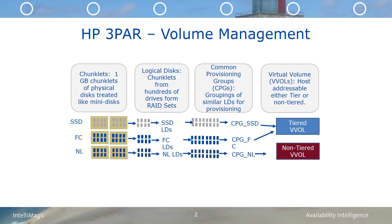The way that 3PAR volume management works is that you will have SSDs, fiber channel drives, and near-line drives. Within those, you will have chunklets that come from the physical disks and are treated like mini disks. Those chunklets are grouped together to form logical disks — either SSDs, fiber channel drives, or near-line drives — and then the logical disks get grouped together in a CPG for provisioning. From the CPGs, the virtual volumes are addressable to a host and are either tiered or non-tiered.